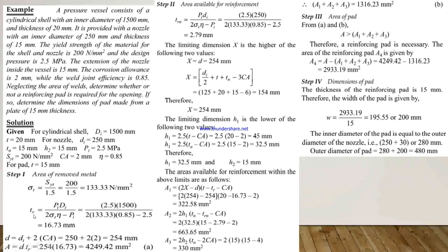Next we calculate the diameter in corroded condition: D = Di + 2·CA, and the area A = D × TR. By calculating, we get A = 4249.42 mm².